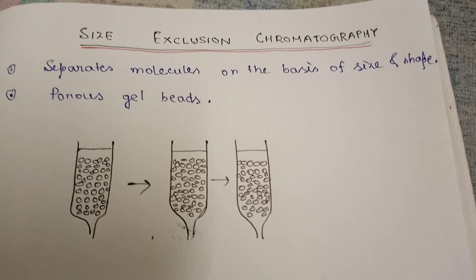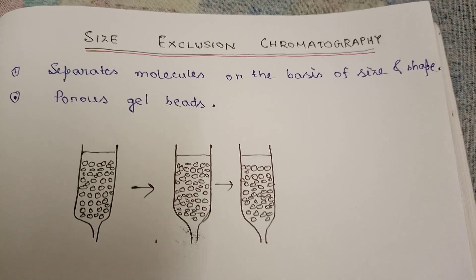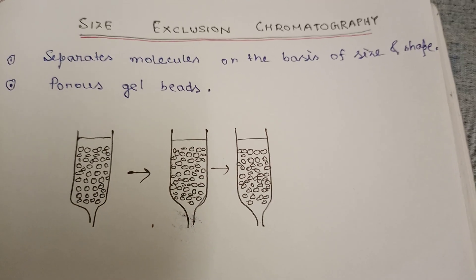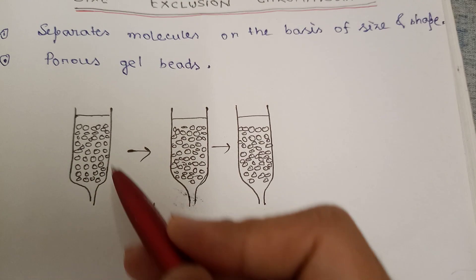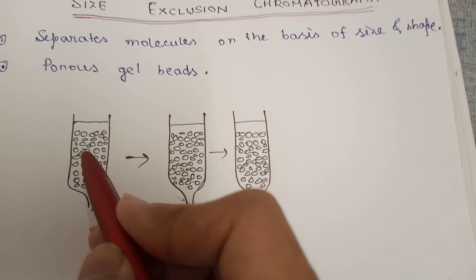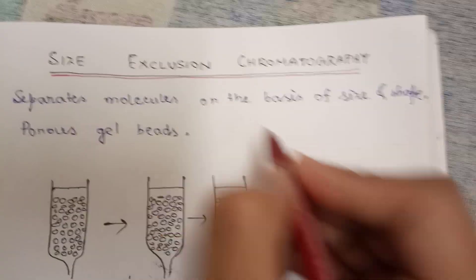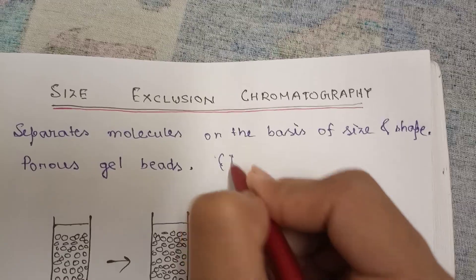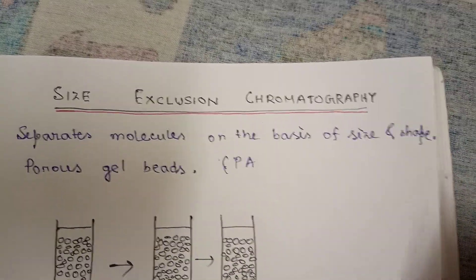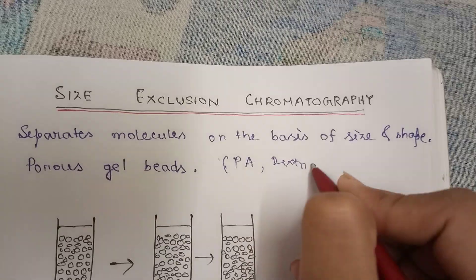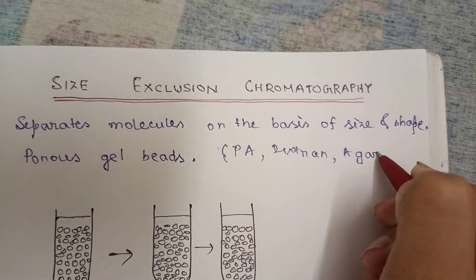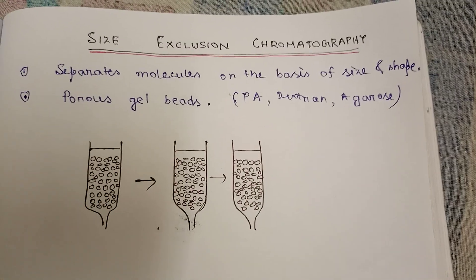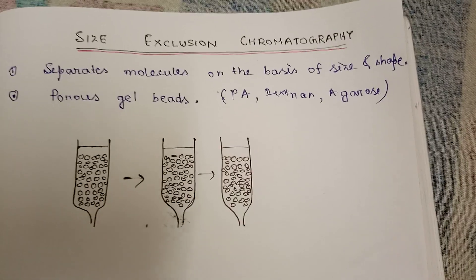It allows the separation of macromolecules based on differences in molecular size and shape. The column matrix is filled with porous gel beads — you can see the column matrix with porous gel beads here. These beads can be made up of polyacrylamide, dextran, or agarose. The pores within these beads will serve as the stationary phase.